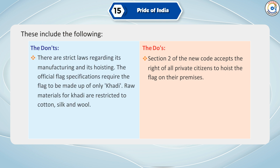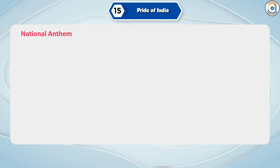There are strict laws regarding its manufacturing and its hoisting. The official flag specifications require the flag to be made up of only khadi. Raw materials for khadi are restricted to cotton, silk and wool.